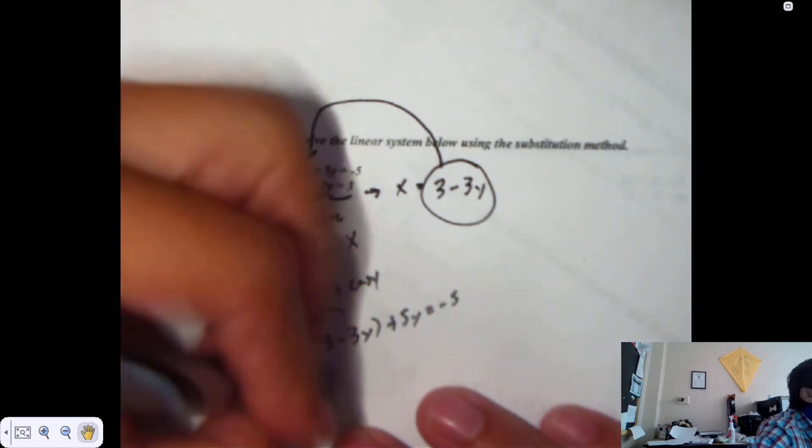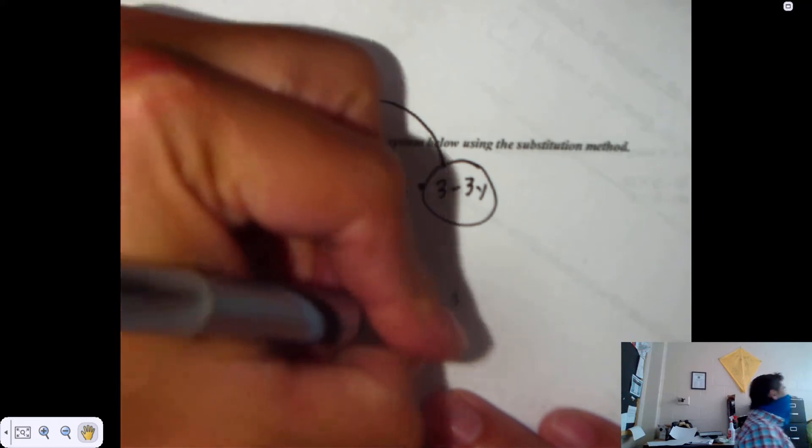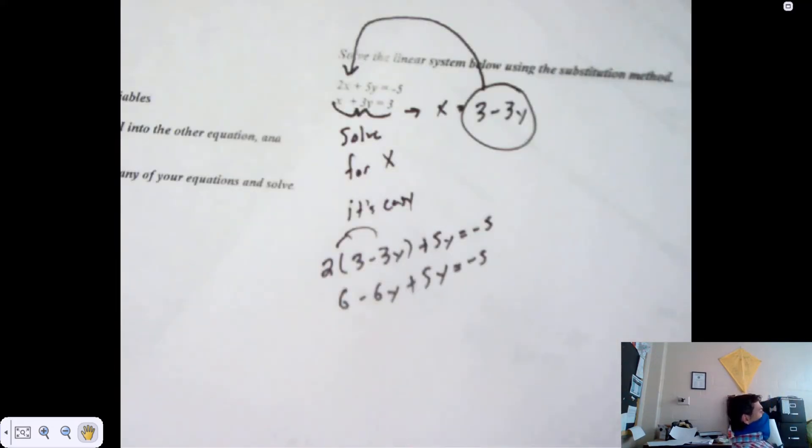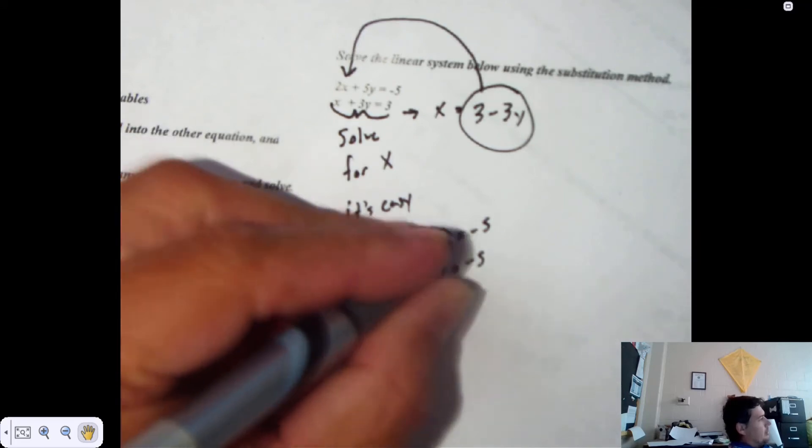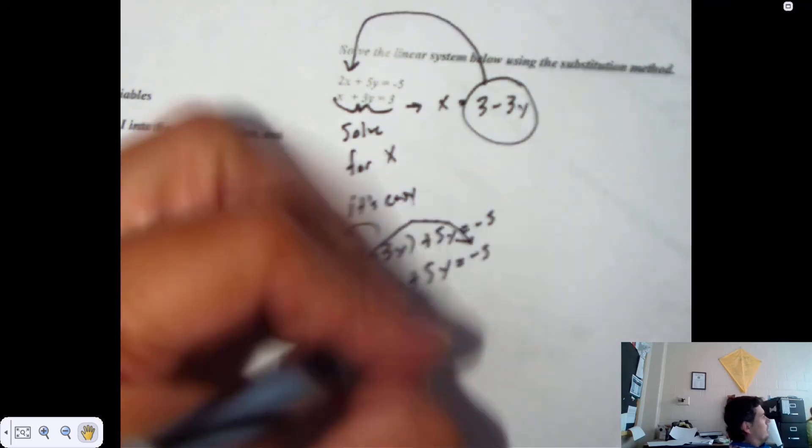Distribute. Six minus 6Y plus 5Y is negative 5. Hold on, let's slow down. Three or four of you in here know what you're doing. The rest of you, you've got some catching up to do. So anyways, how many Ys you got? You've got negative 6 and positive 5. Negative 1Y.